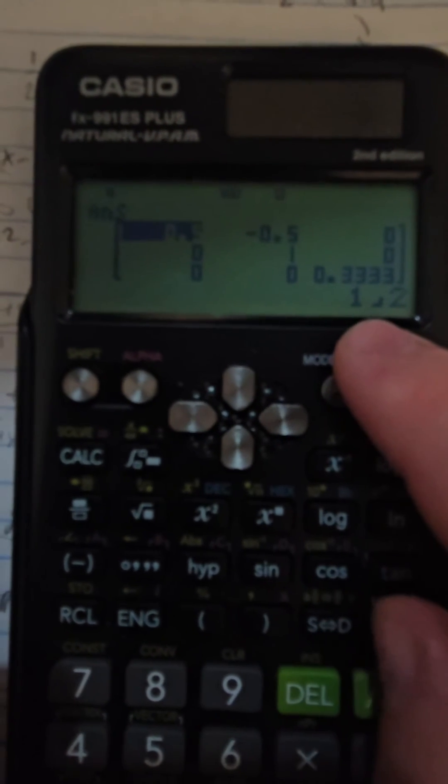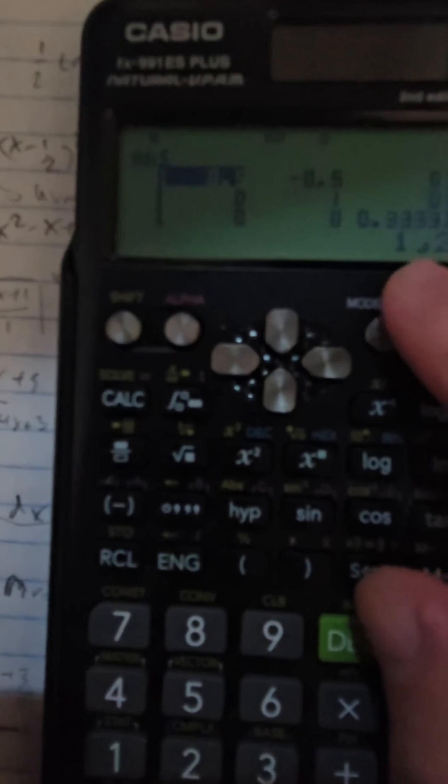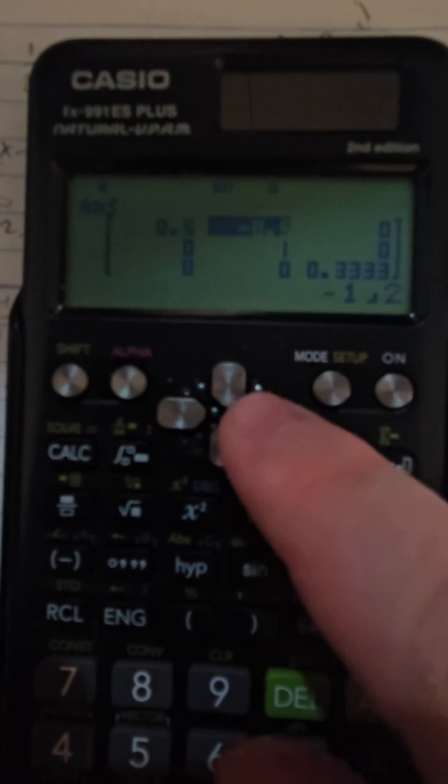So it's a half, but it doesn't have enough space to put it on. So it does 1-2, which is 1 over 2. Now that you see the result,